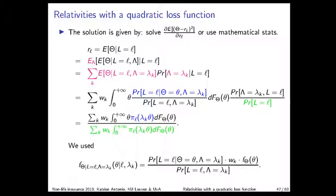To calculate these relativities, three building blocks are needed: first, an a priori tariff with lambda k's and wk's; second, a steady state distribution pi_L; and third, the distribution of the random risk parameter theta, needed to perform the integration over theta.